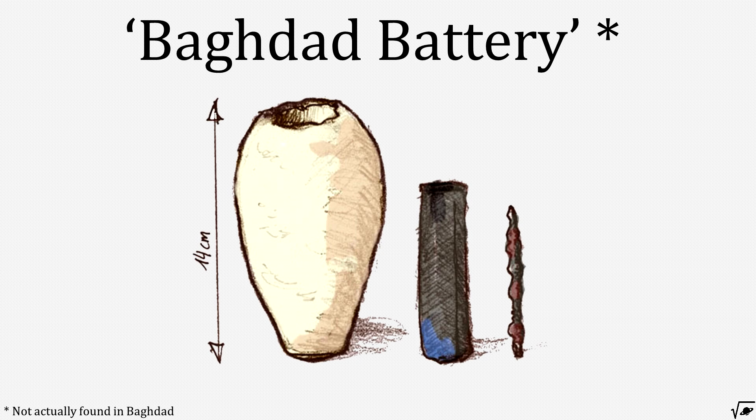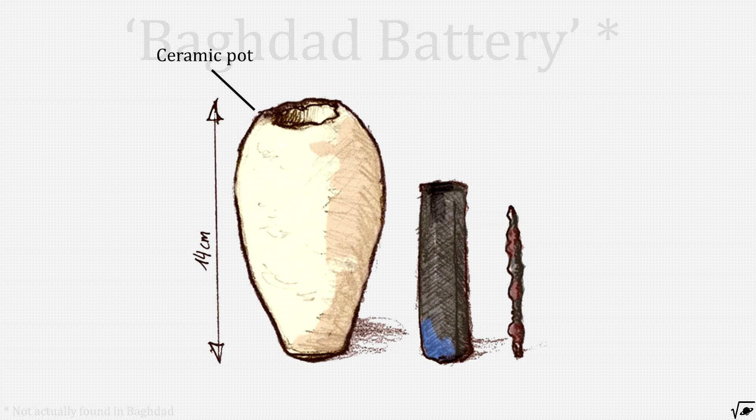König hypothesized that the 2000-year-old objects—a ceramic pot, a copper cylinder, and an iron rod—were used to create a current.